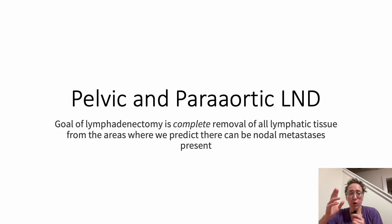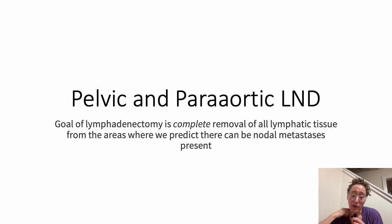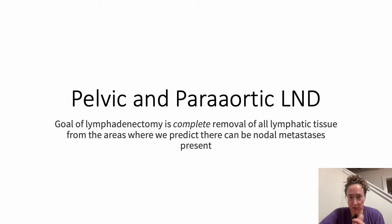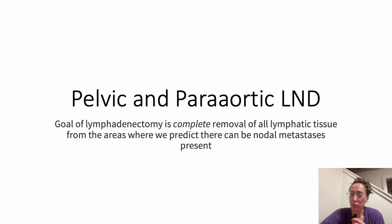The goal of any lymphadenectomy is complete removal of all the lymphatic tissue from areas where we predict nodal mets can be present. We're going to be going over pelvic and periaortic lymph node dissection, so mainly looking at ovarian and endometrial cancer. But we'll also touch on sentinel lymph node dissection, which is not complete removal of all lymphatic tissue — ideally, you're just removing that one sentinel lymph node.